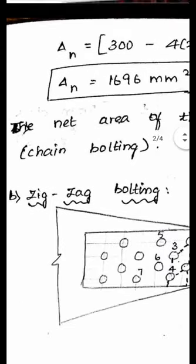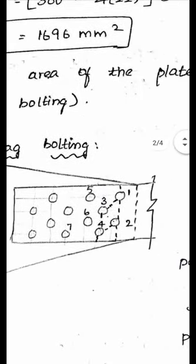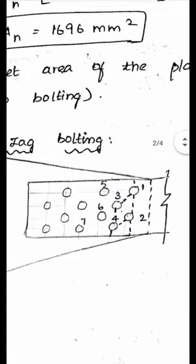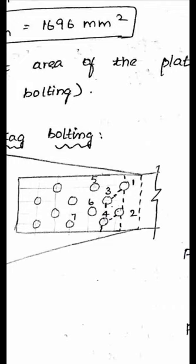Next, coming to the zigzag bolting. I will number the bolts 1, 2, 3, 4, 5, 6 from the right side. I have to consider all possible failure paths. The failure may be either purely vertical through 1, 2, 3, 4, 5, 6, meaning only two holes per path, so all purely vertical paths will give the same net area and we can calculate for only one path.